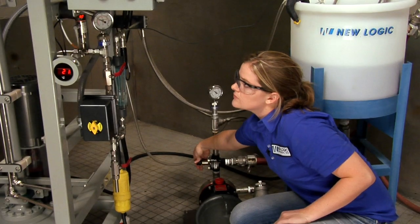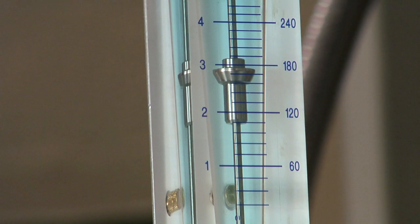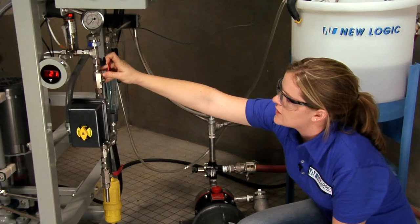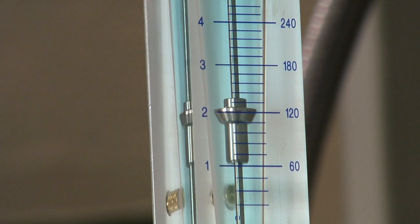While watching the flow meter, Kira is going to close the bypass valve until the flow meter reads 3 gpm. Once it is at 3 gpm, Kira is going to close the concentrate valve until the flow meter reads 2 gpm.